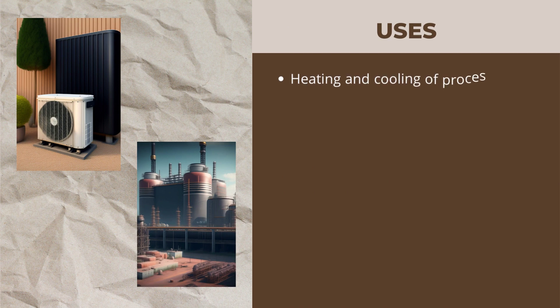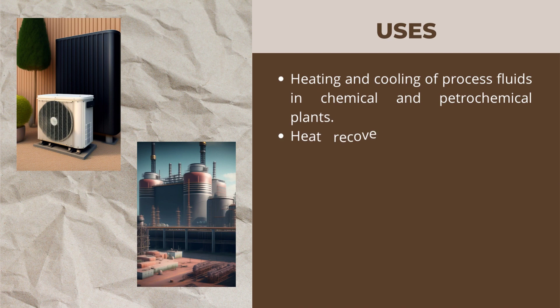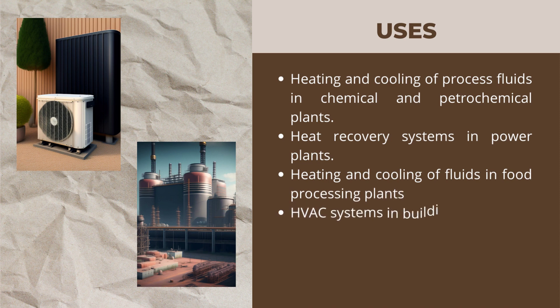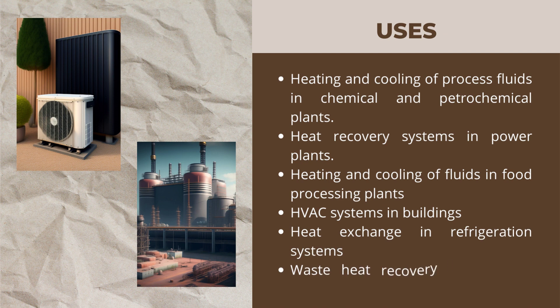Double pipe heat exchangers are commonly used in a variety of industrial applications to transfer heat between two fluids. Practical applications include: heating and cooling of process fluids in chemical and petrochemical plants, heat recovery systems in power plants, heating and cooling of fluids in food processing plants, HVAC systems in buildings, heat exchange in refrigeration systems, and waste heat recovery in industrial processes.